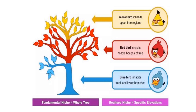Here is another example to make it simple. We have different birds with different colors. The tree is the fundamental niche where all of them live, but each one prefers a particular level on the tree as its realized niche.